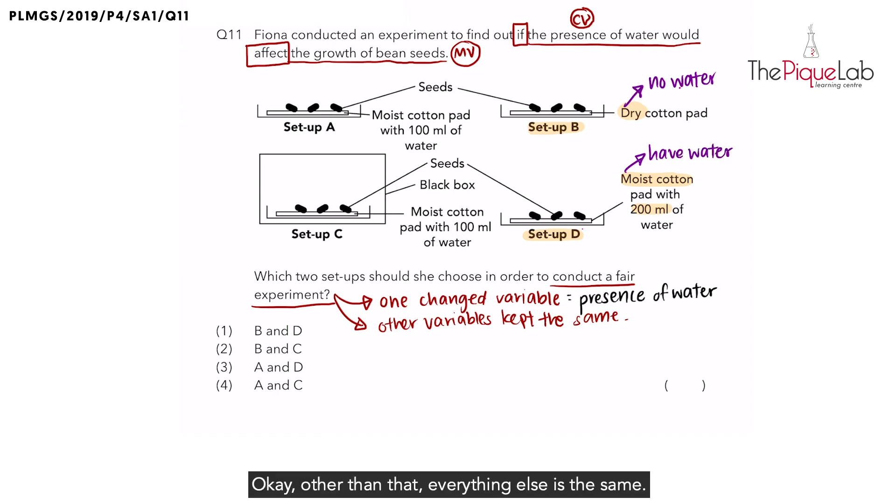Other than that, everything else is the same. So that means that for setups B and D, there is one change variable. And the change variable is the presence of water. So this is a very possible answer already. I'll put a tick over here. But let's take a look at the other setups and see why are they not the correct answer.